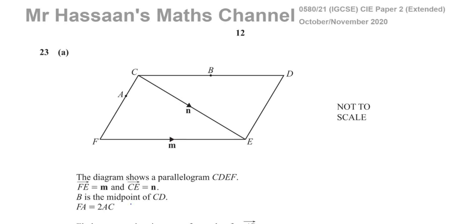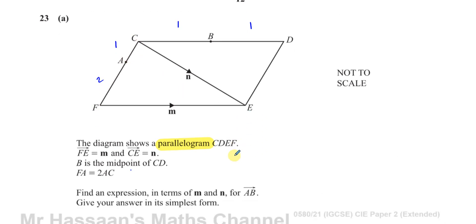This question is about vectors and vector geometry. The diagram shows a parallelogram, very important word, CDEF. The vector from F to E is given the notation M and C to E is defined as the vector N. B is the midpoint of CD, so this divides that into the ratio 1 to 1. And FA is equal to 2 times AC. So if this is one part, that would be two parts.